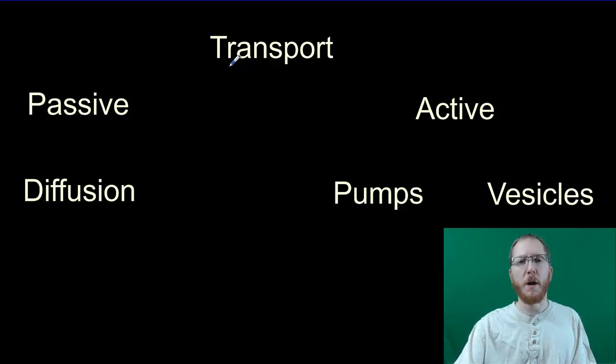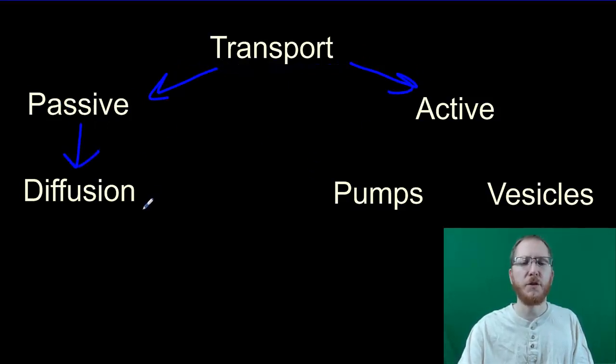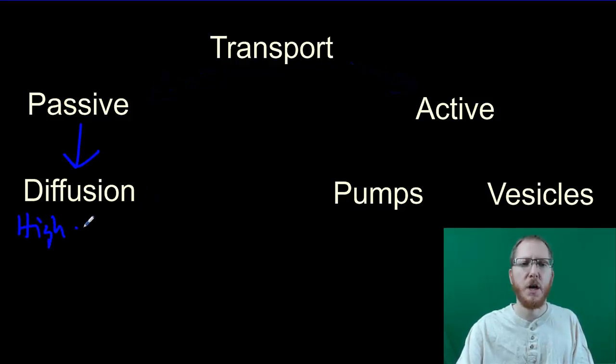Now for a quick prep for transport, when we talk about cellular transport, there's going to be a couple different types. We're going to have passive and active, so we can think of it where there's two pathways that we can take. If you go the passive route, it's going to involve diffusion, which means we're going to go from where there's a lot of something, a high concentration, to where there's less of something, so low.